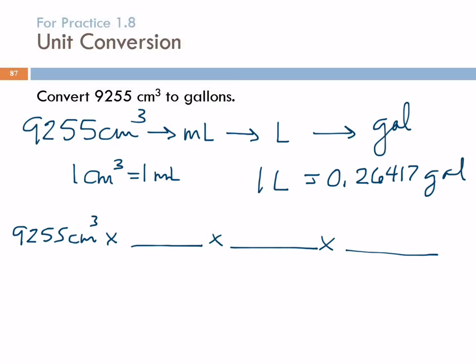In the numerator, write the units in this path that we made. Cubic centimeters, milliliters, liters, gallons. Cubic centimeters, milliliters, liters, gallons. This is not the only path we could have taken. This is just the one we happen to do.